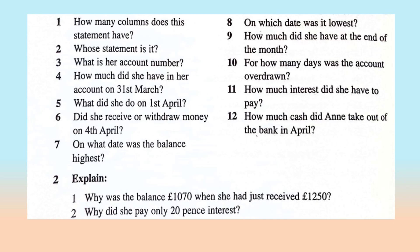On what date was the balance highest? On which date was it lowest? How much did she have at the end of the month? For how many days was the account overdrawn? How much interest did she have to pay? How much cash did Anne take out of the bank in April? Why was the balance $1,070 when she had just received $1,020? Why did she pay only $0.20 interest? You can write your answers in the comments and I will revise them with you and give you the correct answers.